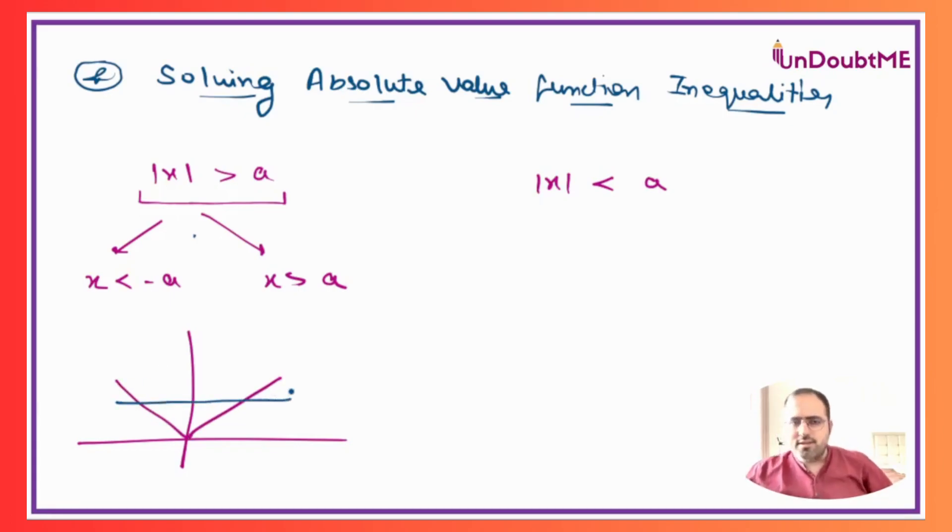And a will be a value somewhere over here. So when I'm talking about |x| greater than a, I am actually talking about these branches of the function. So it is very clearly understood that this will be minus a and this will be plus a, and x less than minus a or x greater than a will be our answer.